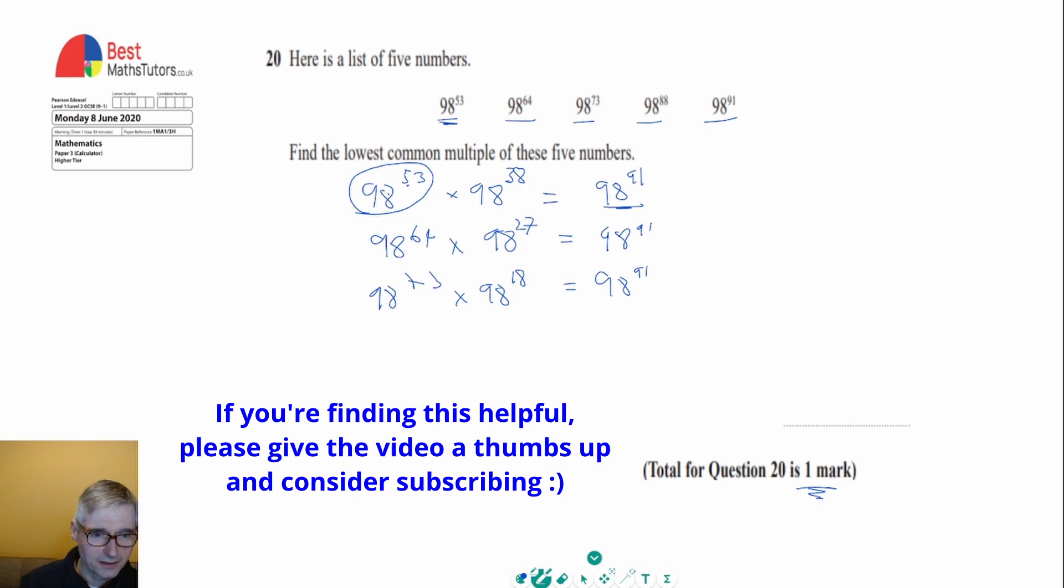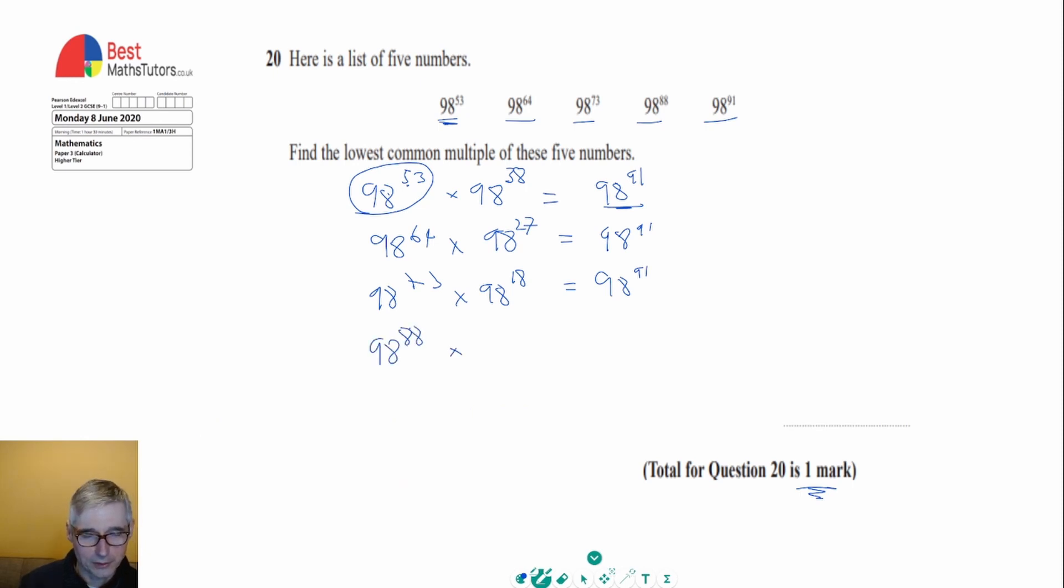Finally, 98 to the 88 times 98 to the power 3, again always adding the powers using that rule, gives us 98 to the 91 as well. And 98 to the 91 only needs to be multiplied by 1 to get 98 to the 91, so we can see they all actually go into 98 to the 91.